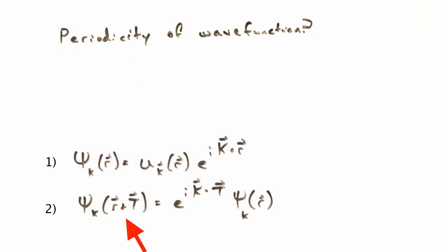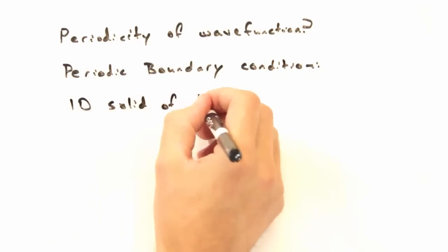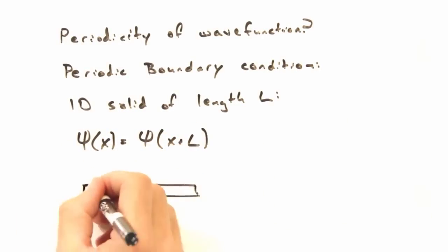We said that at some position r plus t, the new wave function would be modulated. Okay, got it. So the wave function's periodicity is connected to the periodic boundary conditions, right? Yeah, keep going with that.